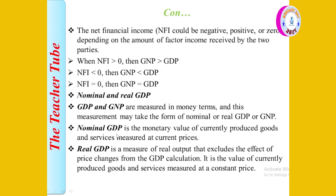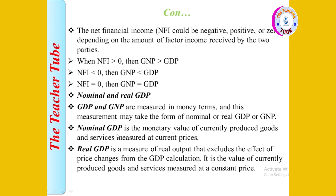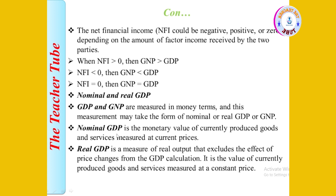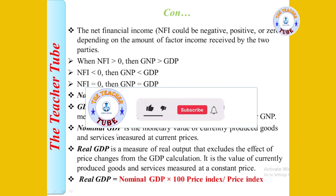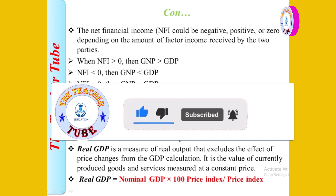Real GDP is a measurement of real output that excludes the effects of price change from the GDP calculation. The formula is: Real GDP = Nominal GDP × (100 / Price Index).